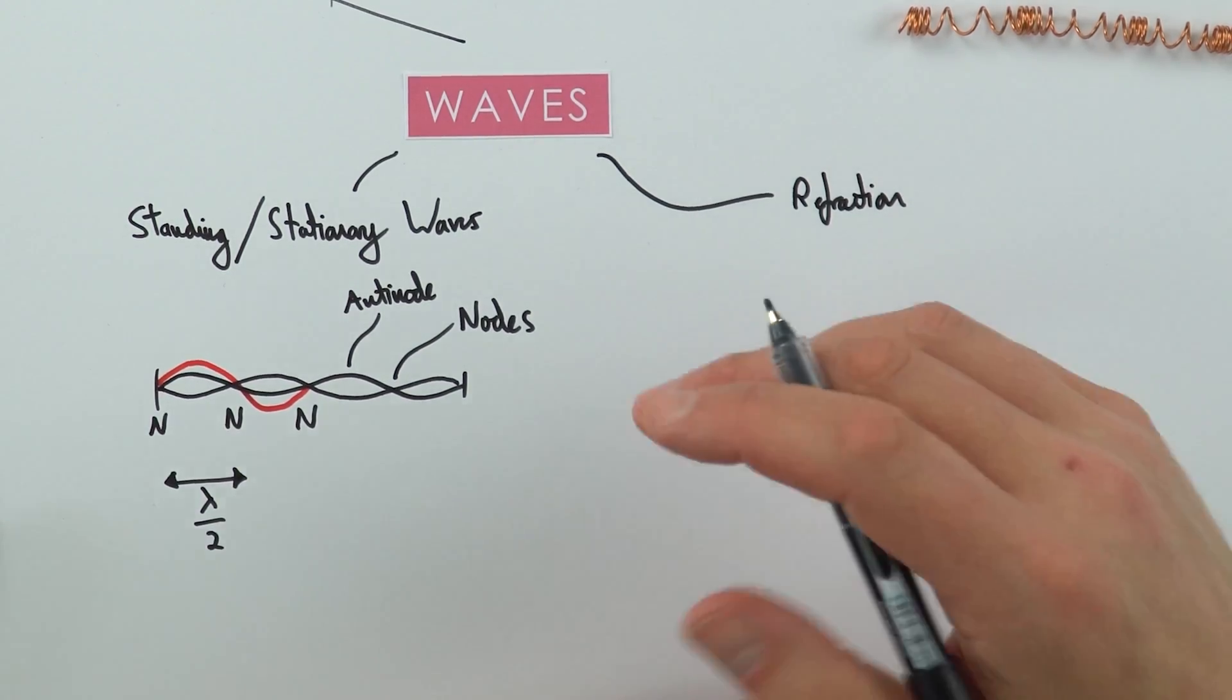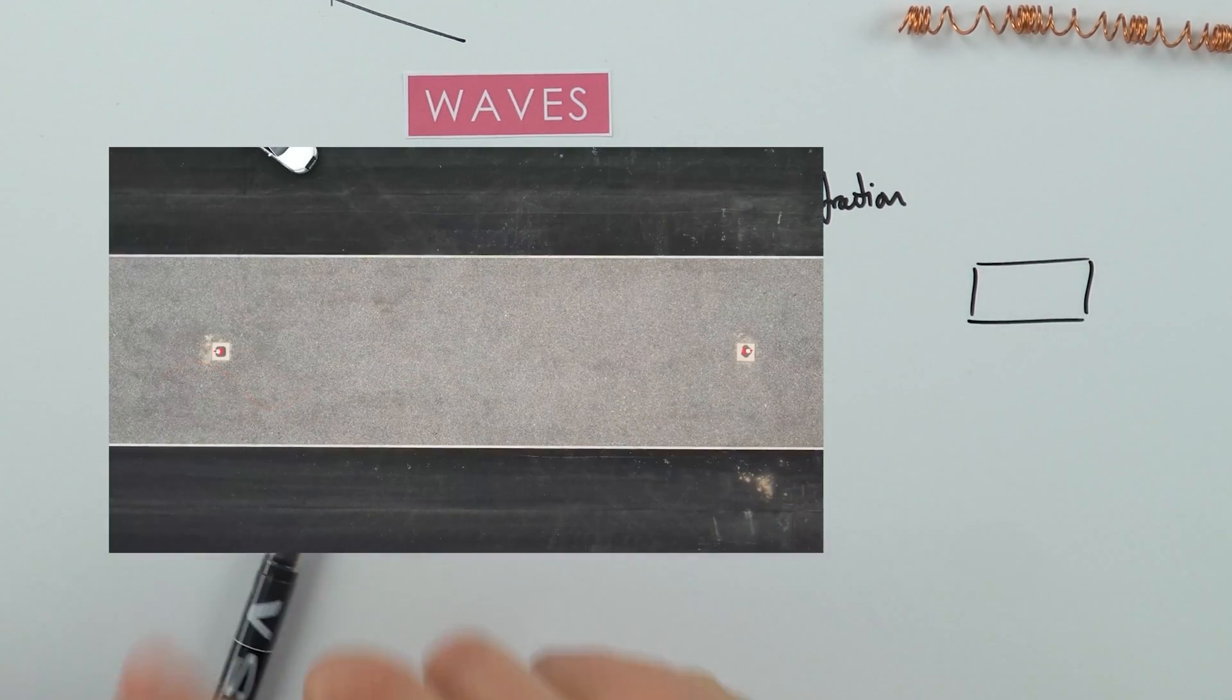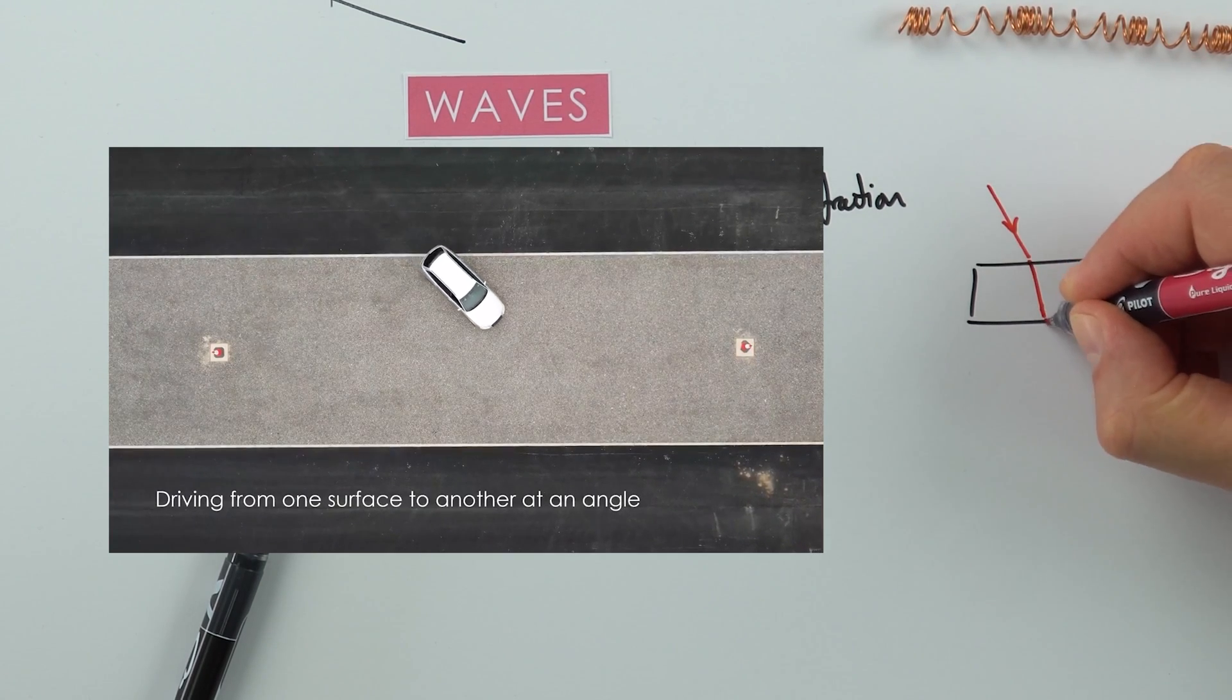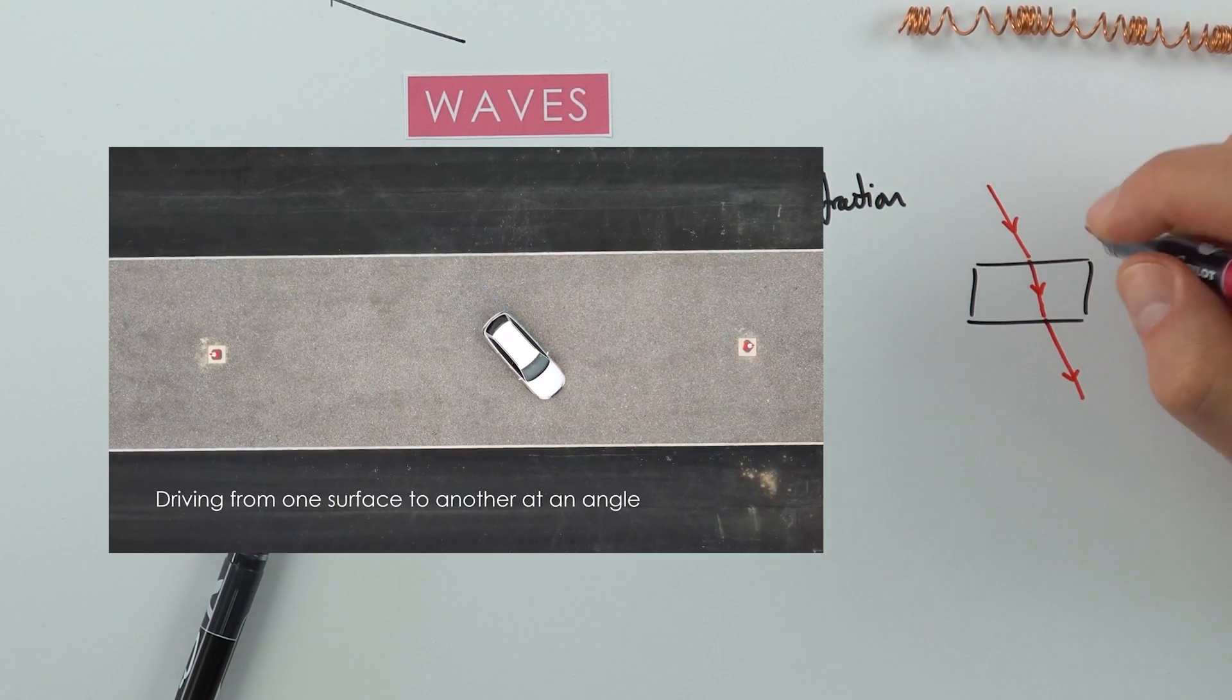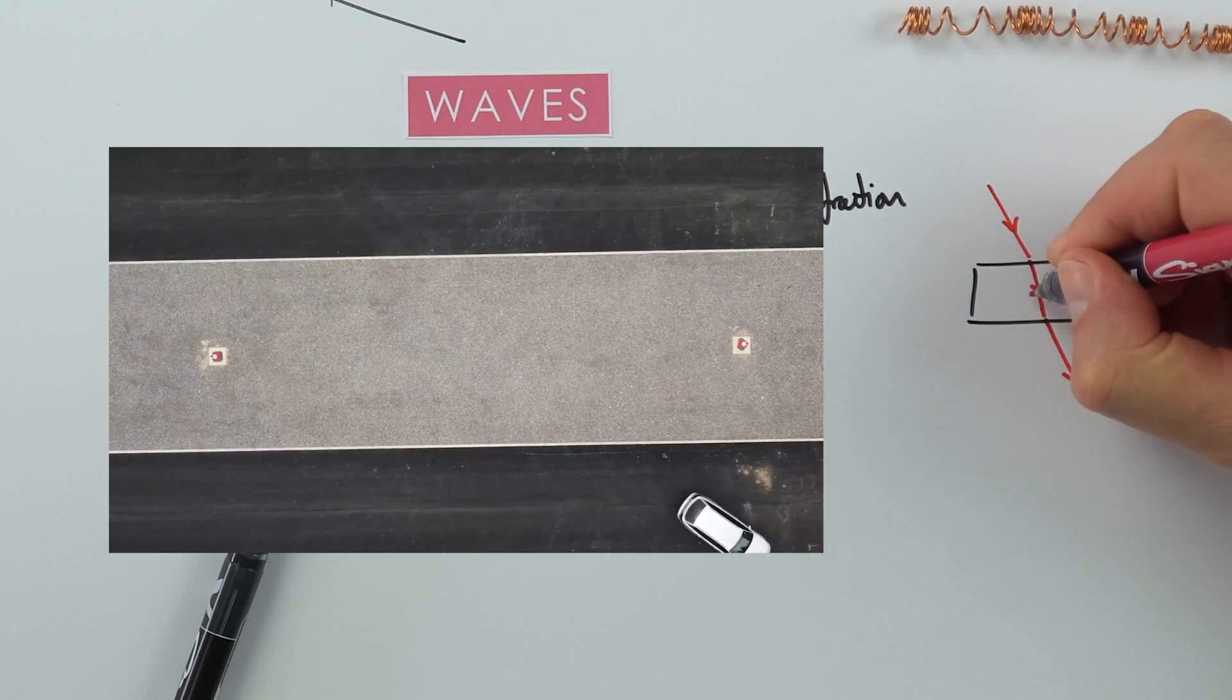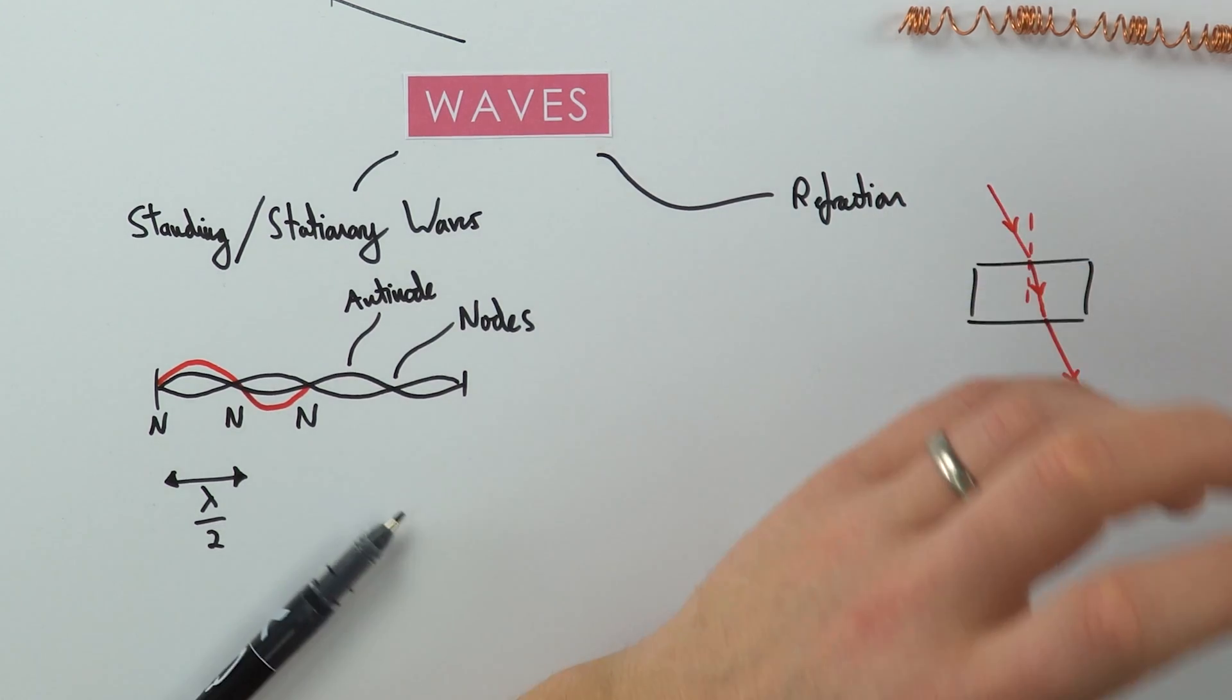This is something you might have seen before. You might have maybe a glass block here, you have a ray of light, and then you can look at how that refracts into the block. Before, you might have just said where we've got things like the normal line here, we've got the angle of incidence and refraction.